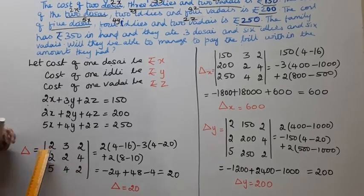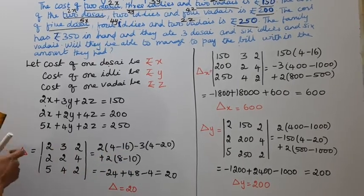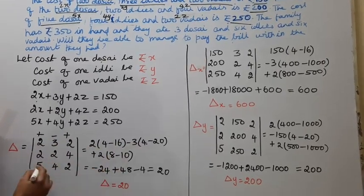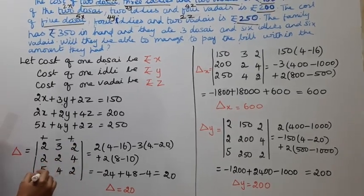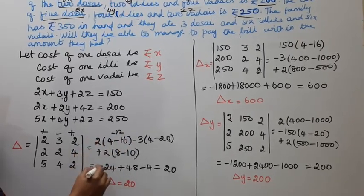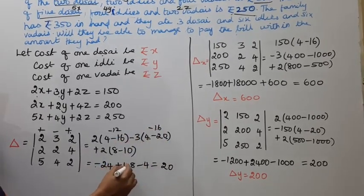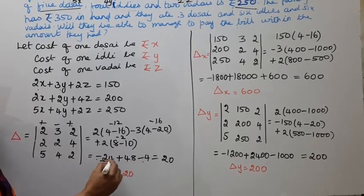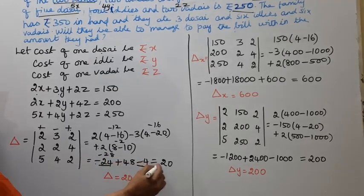Computing delta: 2 into (2×2 − 4×4) minus 3 into (2×2 − 4×5) plus 2 into (2×4 − 2×5). That gives 2(4−16) minus 3(4−20) plus 2(8−10), which is 2(−12) minus 3(−16) plus 2(−2), giving −24 + 48 − 4 = 20.